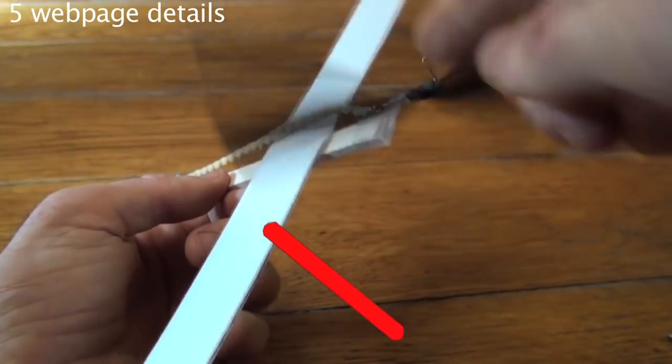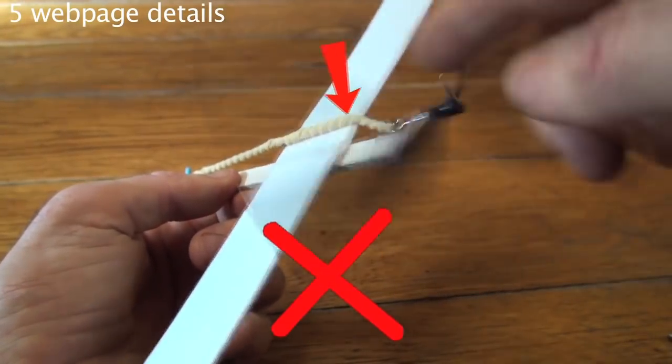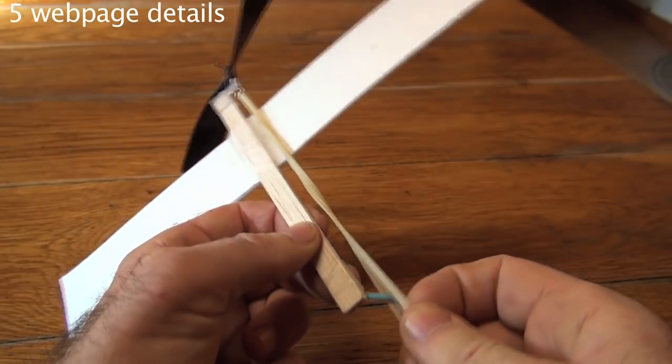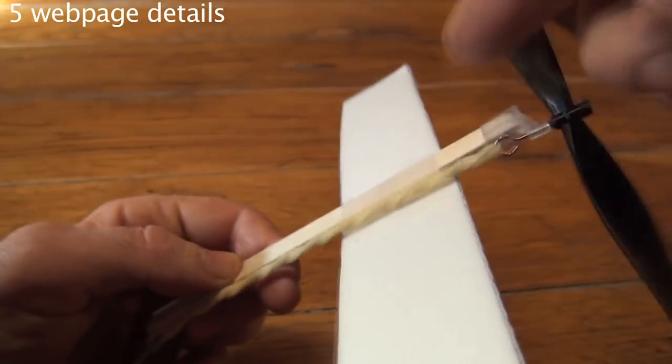When you put the rubber band back on, make sure it does not catch on the wing like this. Too much friction. That's better.